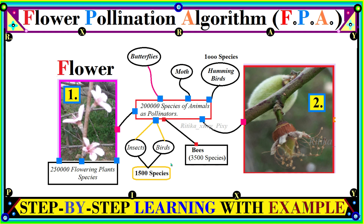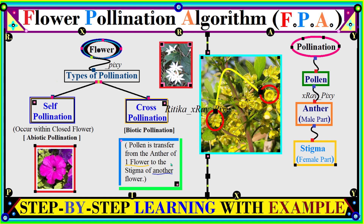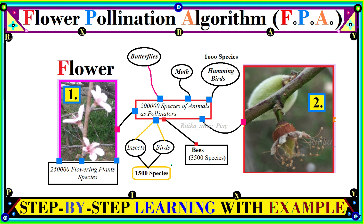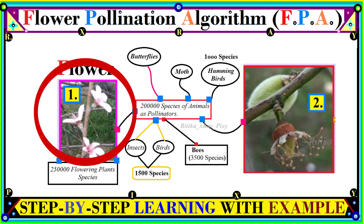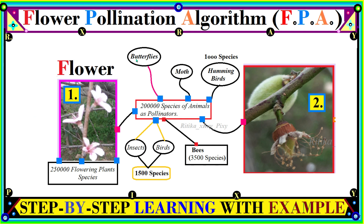Since this algorithm is inspired by the flowering behavior of plants in nature, we will first understand what flowering behavior and pollination are, and how the whole process occurs in nature. Flowers are the tools used by plants to make their seeds and fruits, and flowers must be pollinated by pollinators for the plant to create seeds and fruits. There are more than 250,000 flowering plant species worldwide and 200,000 species of pollinators, such as butterflies, moths, hummingbirds, birds, insects, bees, and others.